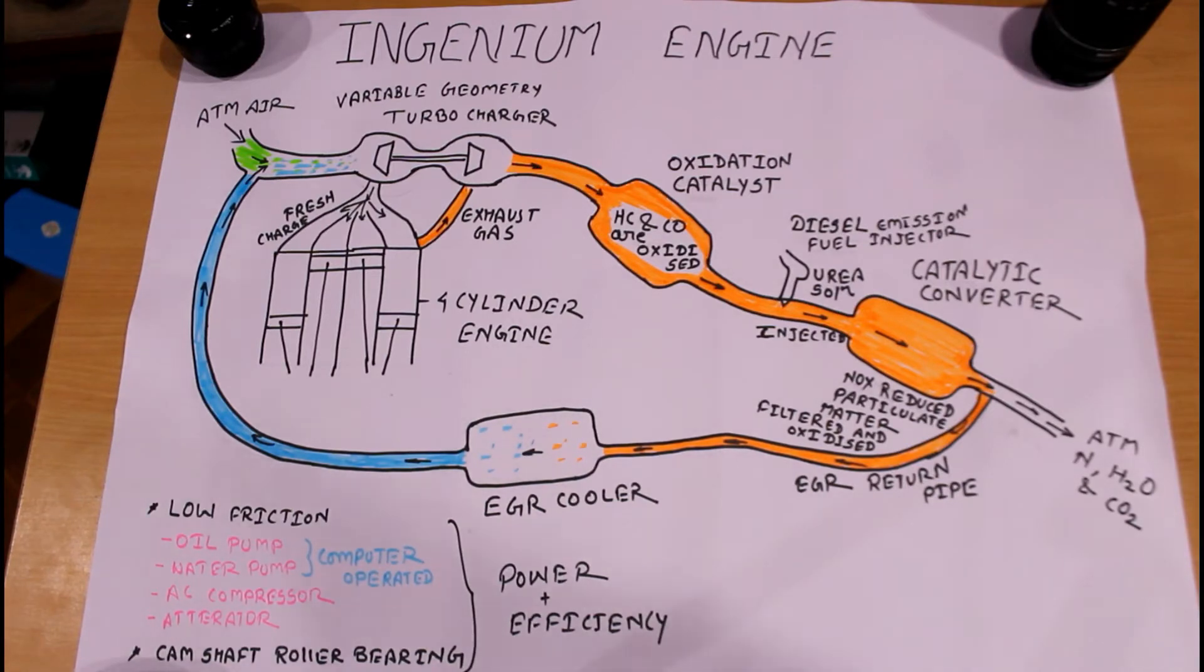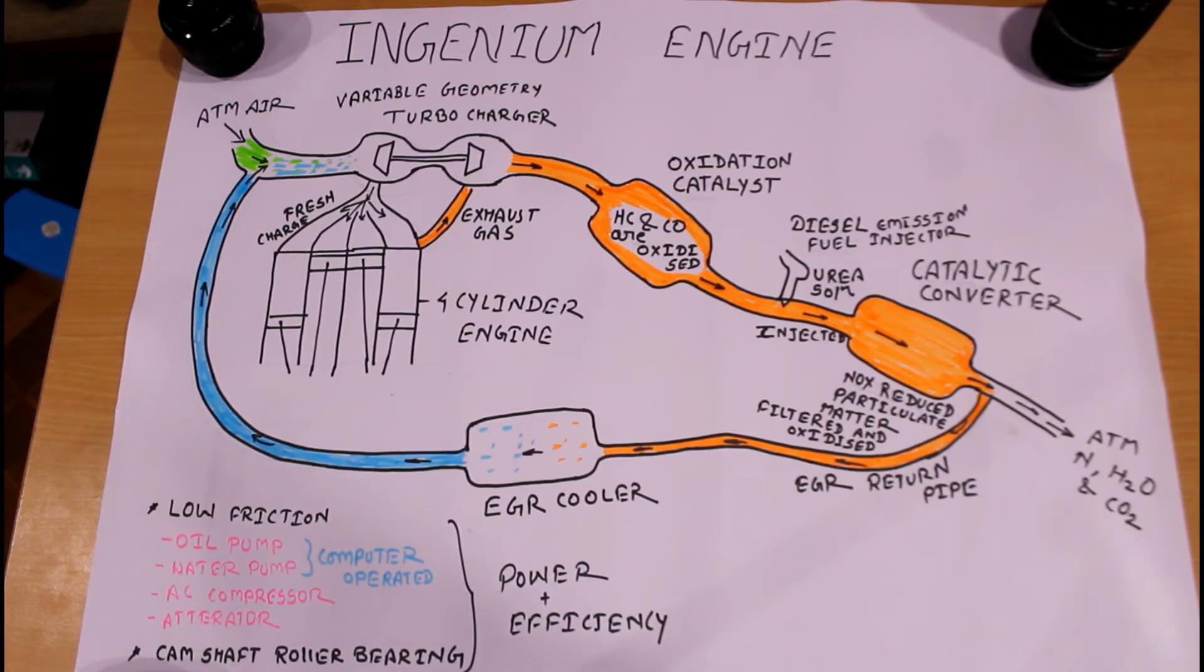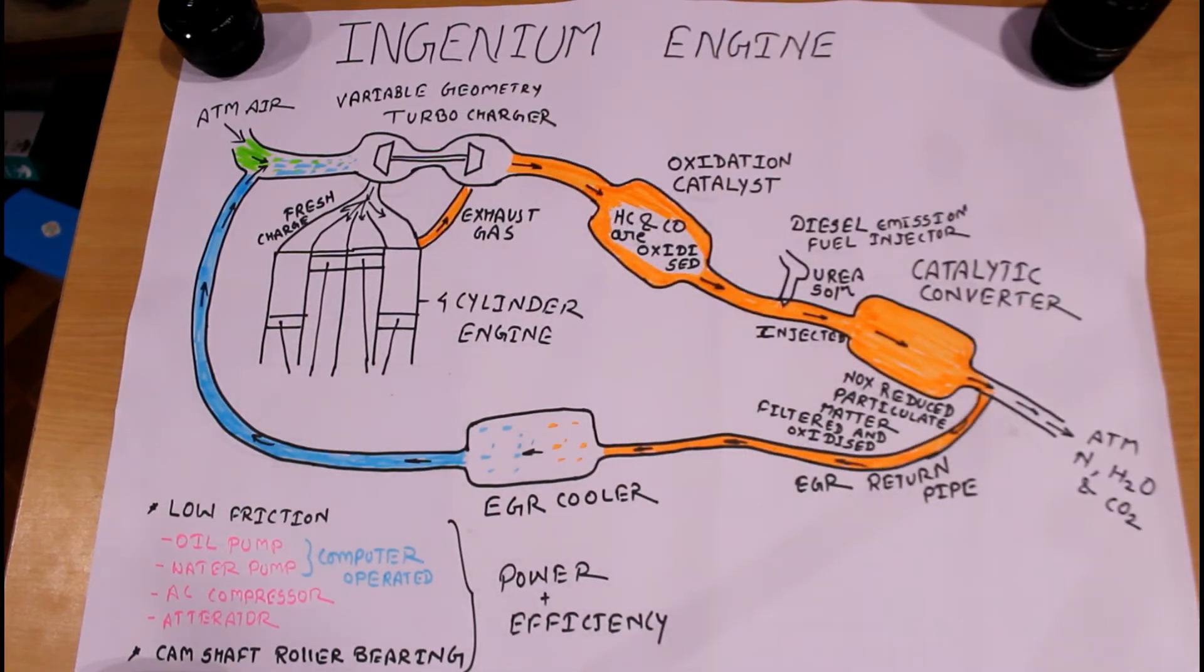At the exhaust end of the engine, we use a variable geometry turbocharger and a common rail direct fuel injection system in this Ingenium engine for quick response. These are the reasons for increasing the power and efficiency.